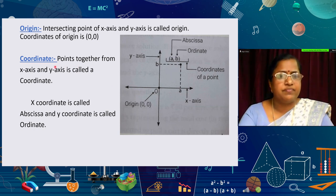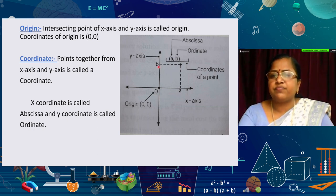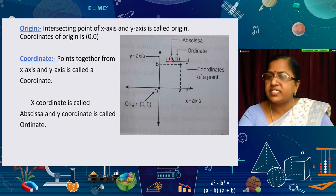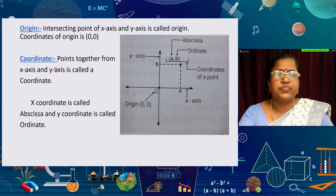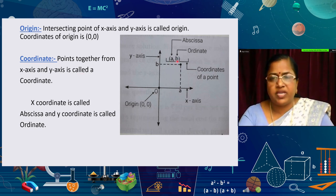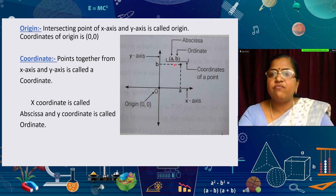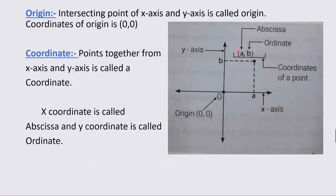Now, what is meant by coordinates? If we are given a point A on the x-axis and B on the y-axis, together we write the point (A, B) — always writing the x-axis value first, then the y-axis value. This pair (A, B) is called a coordinate. The x-axis value is called the abscissa and the y-axis value is called the ordinate.